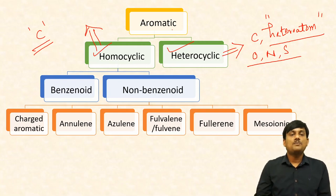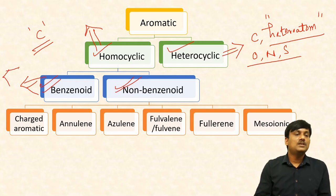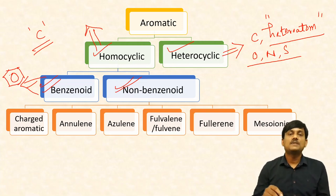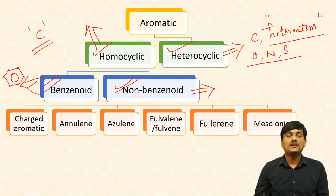Again, homocyclic compounds are classified into benzenoid homocyclic compounds and non-benzenoid homocyclic compounds. In benzenoid homocyclic compounds, you can find benzene ring — they have at least one benzene ring. Some aromatic compounds do not have benzene ring, but they are aromatic. These aromatic compounds are called as non-benzenoid.